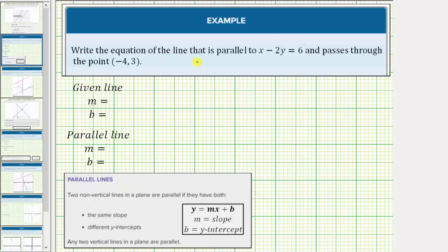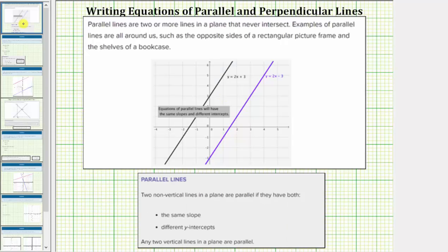We're asked to write the equation of the line that is parallel to x minus 2y equals 6 and passes through the point (-4, 3). Remember, if two lines are parallel, then the slopes must be the same and the y-intercepts must be different.